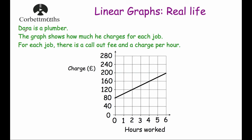So let's have a look at our first example. Dara is a plumber and the graph shows how much he charges for each job. For each job there is a call-out fee and a charge per hour. Certain people you bring to your house, such as plumbers or electricians, charge a call-out fee — a certain amount of money they charge just for coming to your house. Then they charge at an hourly rate. A similar situation is a taxi, where the driver presses a button and it starts at perhaps £2, then the price goes up as the taxi travels — there's a fixed fee you pay straight away, then extra charges on top.